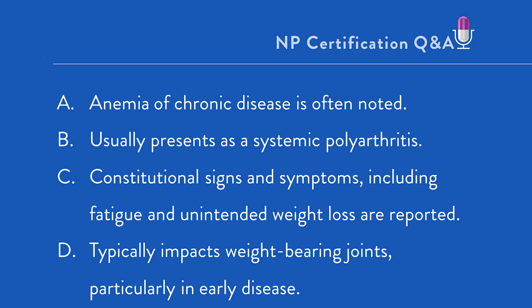First option, A: anemia of chronic disease is often noted. Given the disease's pathology and where findings are largely limited to the affected joint, anemia of chronic disease is not often noted in OA. However, anemia of chronic disease, a.k.a. ACD, is commonly seen in arthritis forms that have a more systemic inflammatory component, such as rheumatoid arthritis.